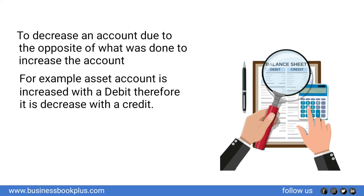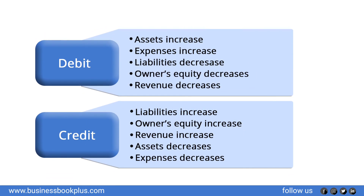For a more clear view, let's see this graphical representation. Debit increases assets and expenses, but decreases liabilities, owners' equity, and revenues. Whereas credit increases liabilities, owners' equity, and revenues, but decreases assets and expenses — just the opposite.